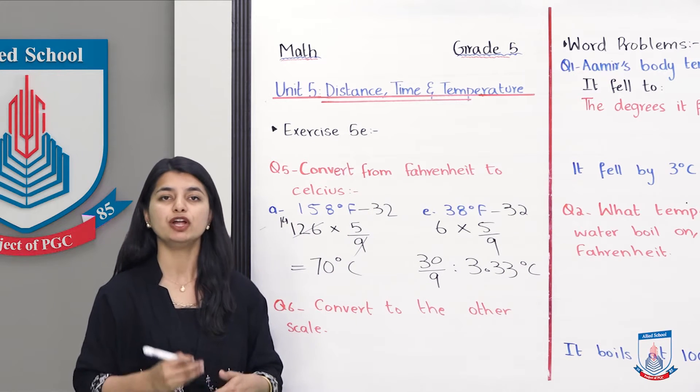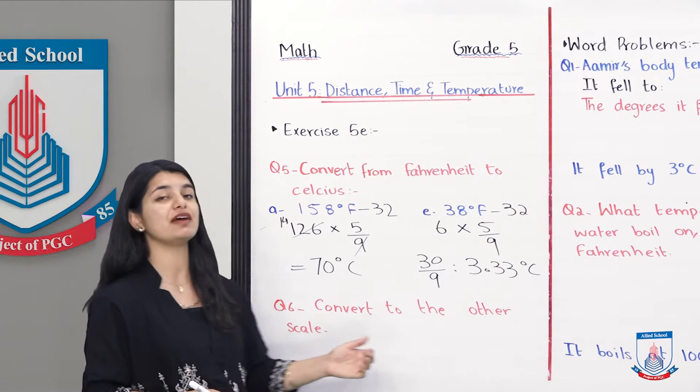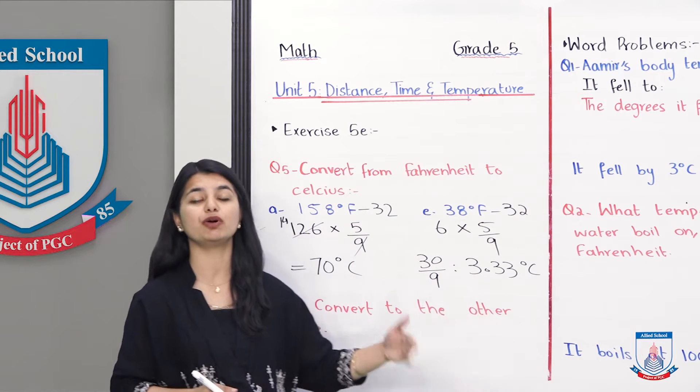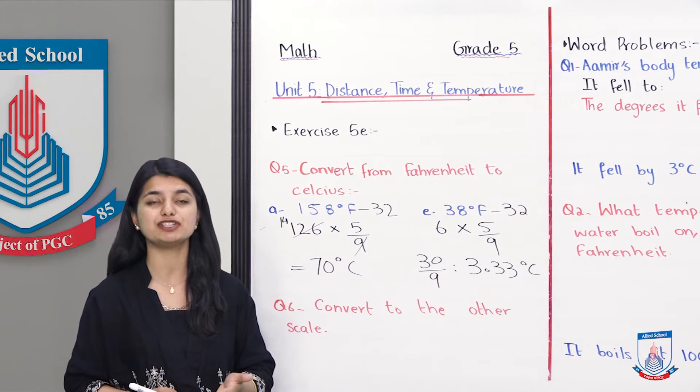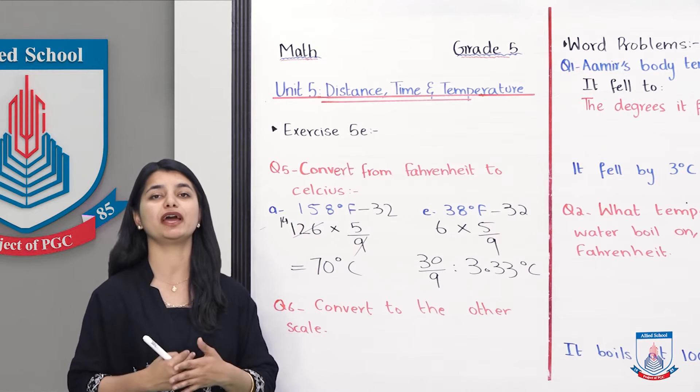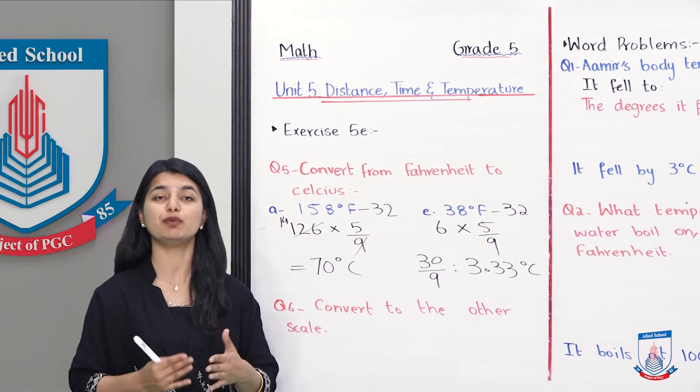So you will do this part, you will do this part. Question number 7 maybe you have to do this kind of conversion where you have to go to Fahrenheit from Celsius, you will refer to the procedure in the previous lecture. With this, we will keep our questions, they are finished. Now let's look at our word problems.